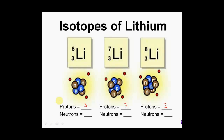The number of neutrons in the first is three, the next has four, and the last has five. Another way to find this is: the top number is the mass number — protons plus neutrons — and the bottom number is the atomic number, the number of protons. Just do a quick subtraction: six minus three is three neutrons, seven minus three is four neutrons, and eight minus three is five neutrons. The mass number is a combination of protons plus neutrons, so subtracting the protons leaves you with the neutrons.